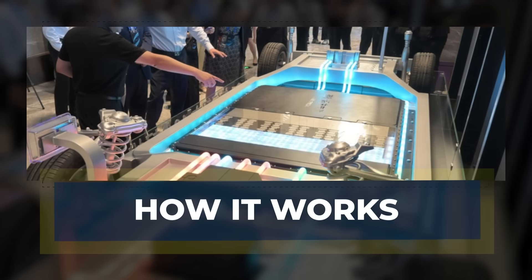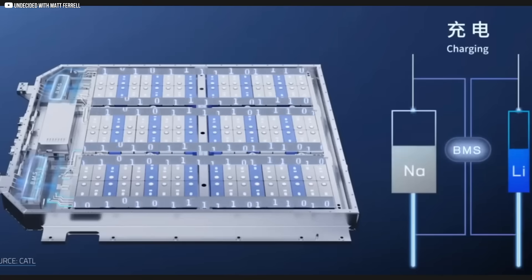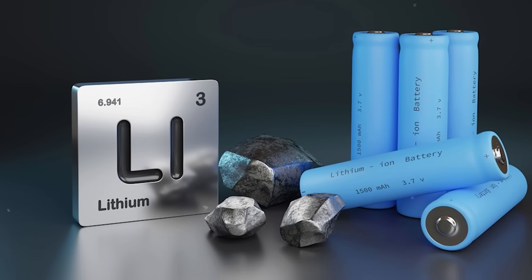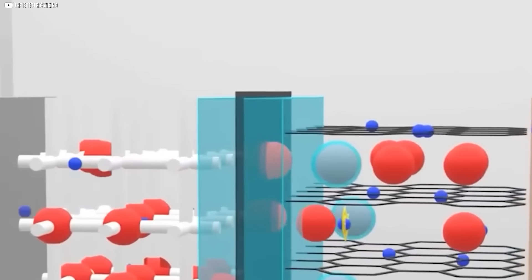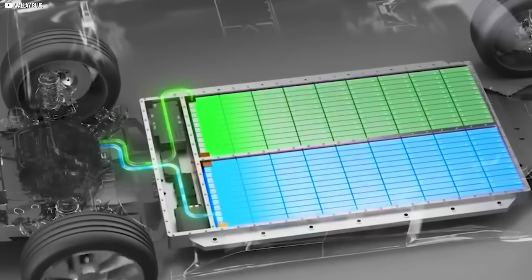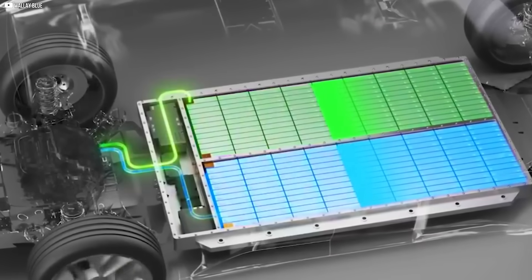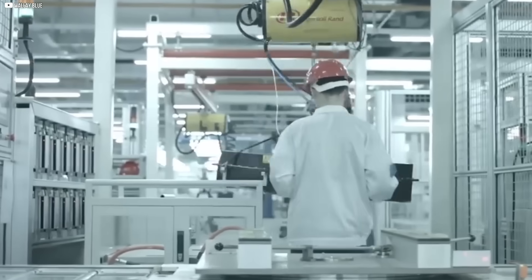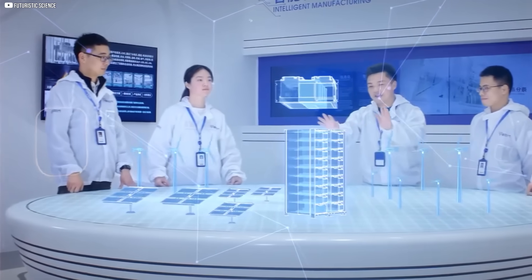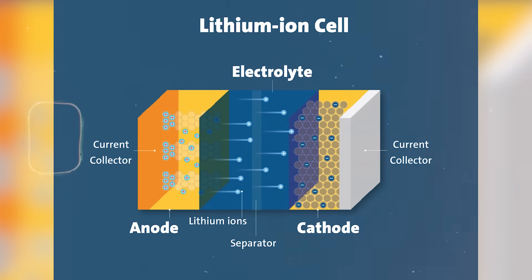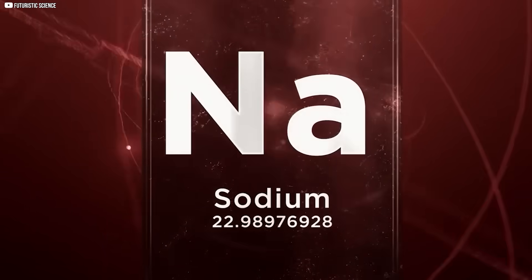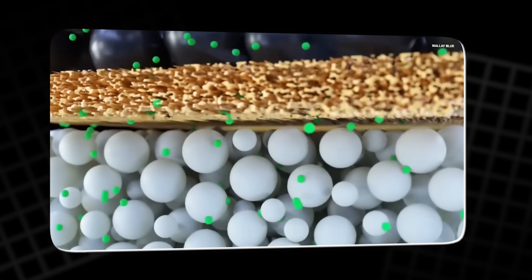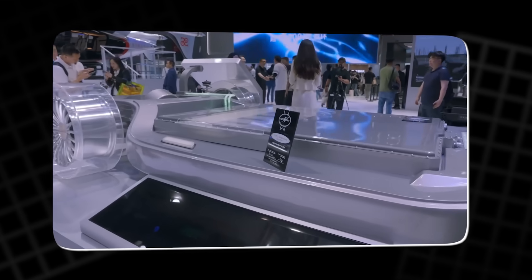How it works. At its core, a sodium-ion battery functions much like a lithium-ion one. Both rely on the movement of ions between two electrodes during charging and discharging. But the real difference lies in the material choice, and that changes everything. Instead of lithium, sodium ions shuttle back and forth inside the battery. On the surface, this swap seems simple, but chemically, it presents a set of new challenges and advantages.